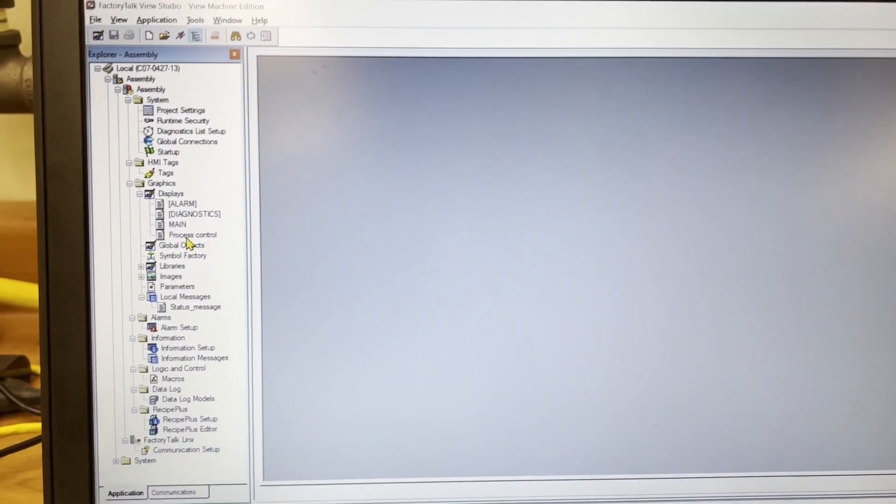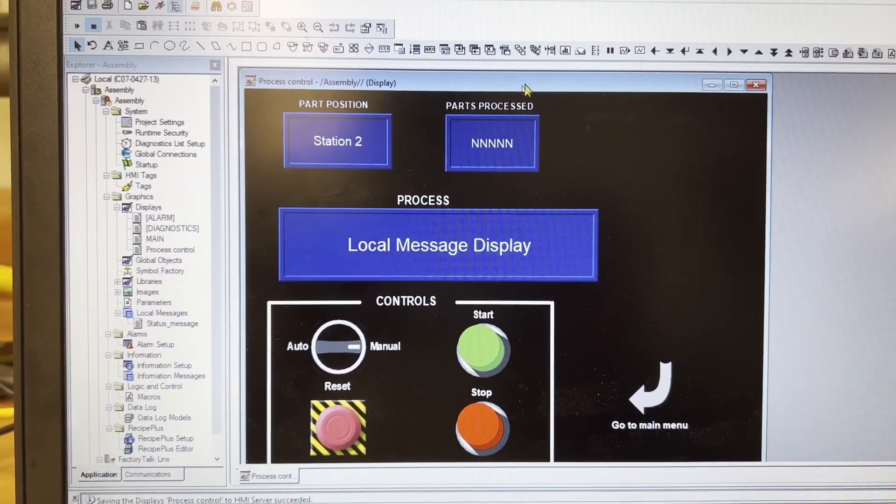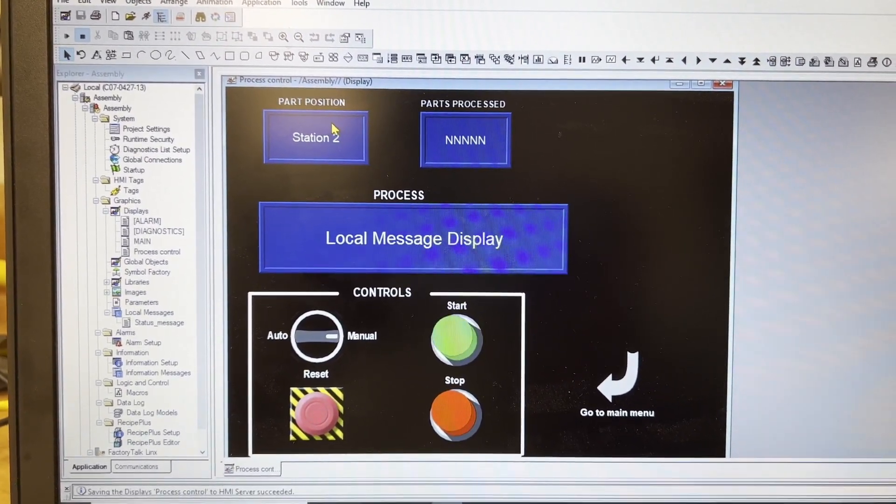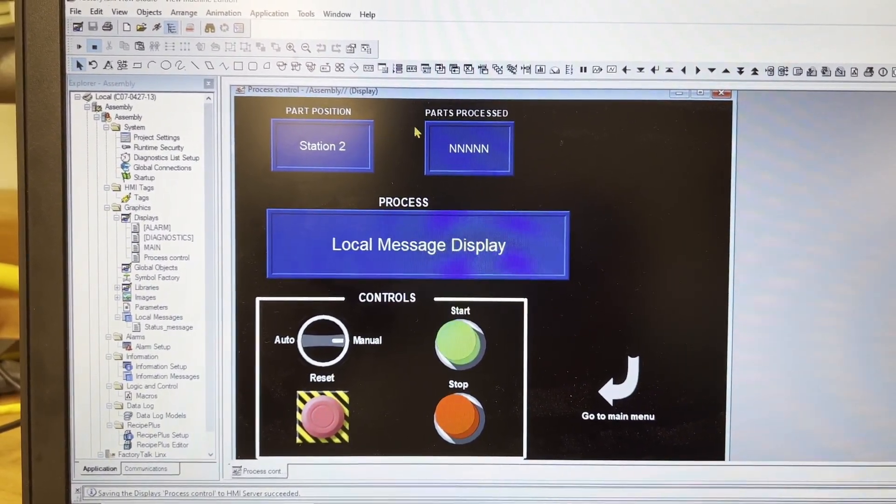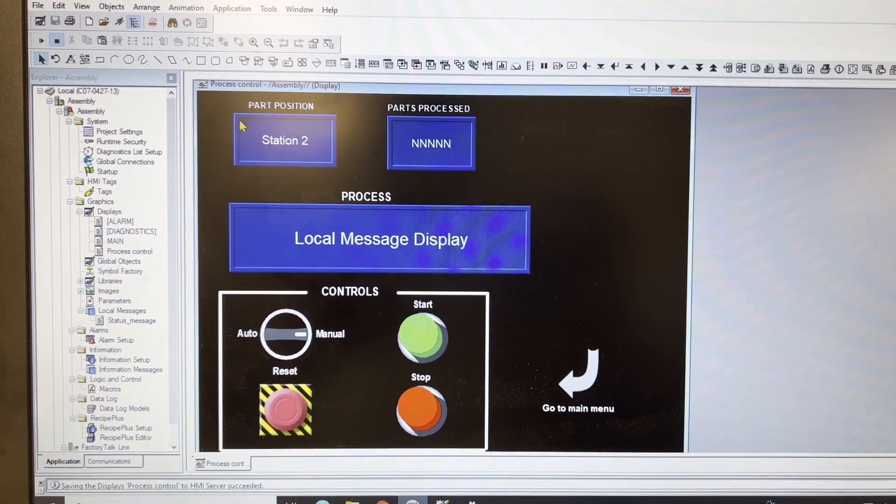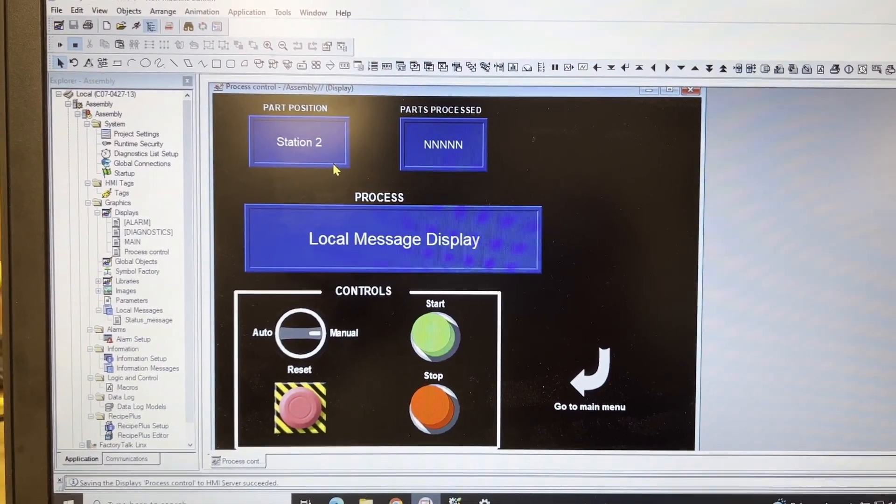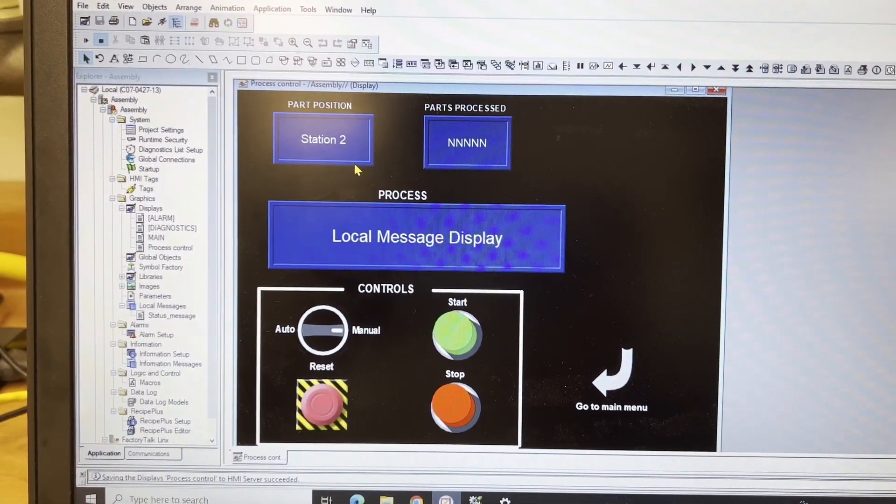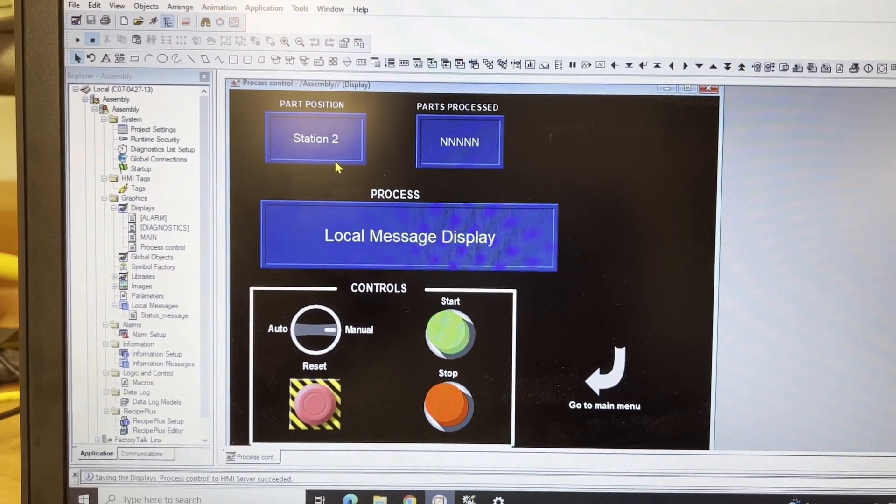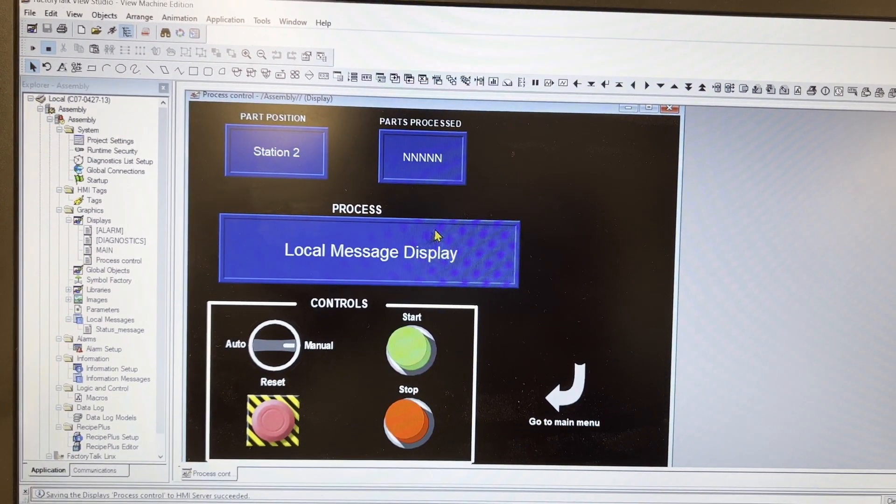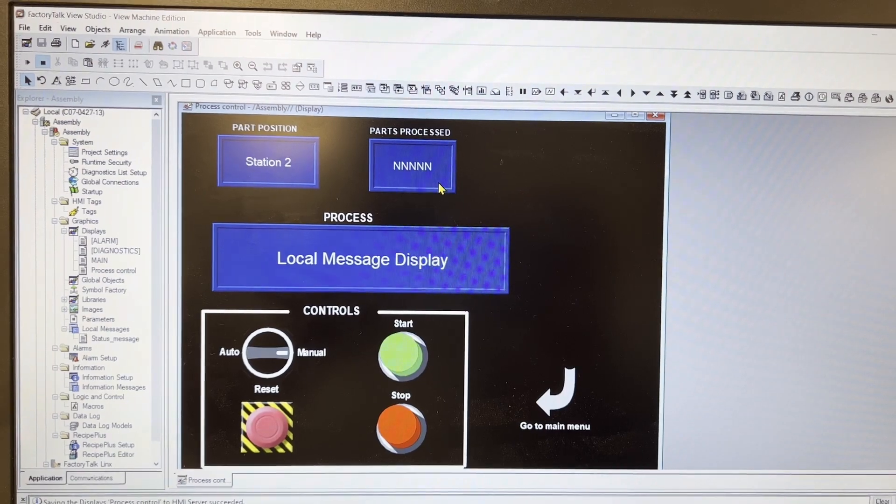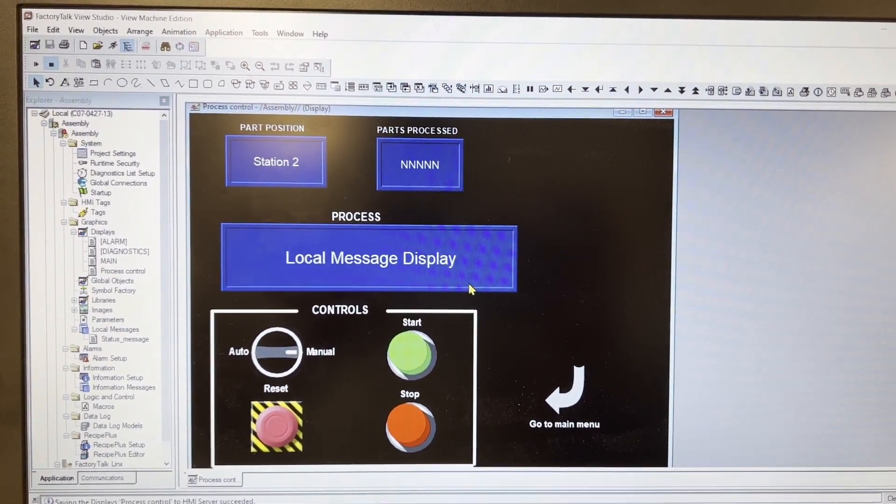Next open the Factory Talk View Studio software. You can see different input and output objects placed on the display. There are also a set of controls. This message indicates the part position either at station one or at station two. This indicates the number of parts processed. And this indicates the type of operation being performed.